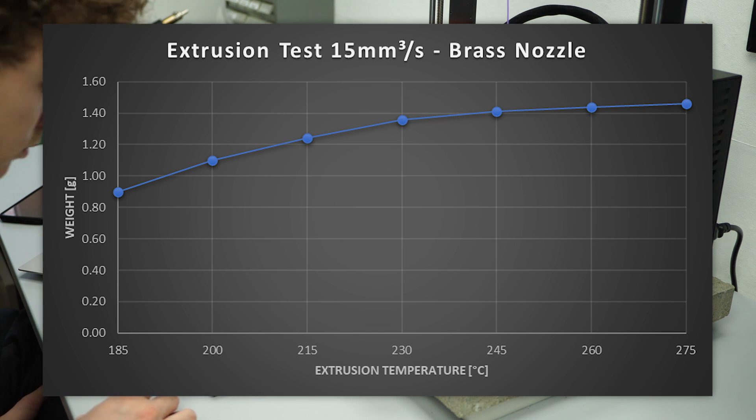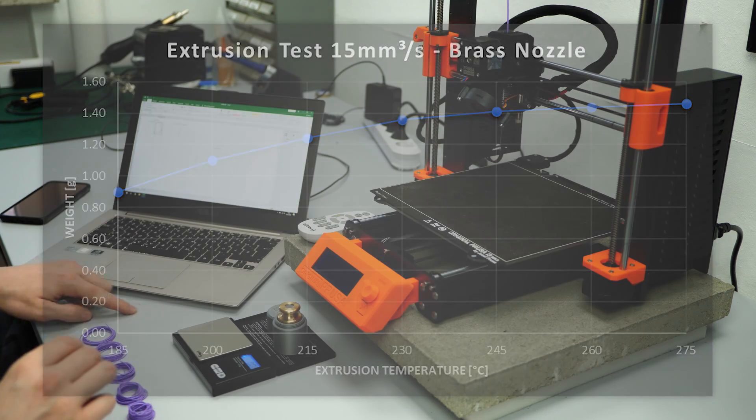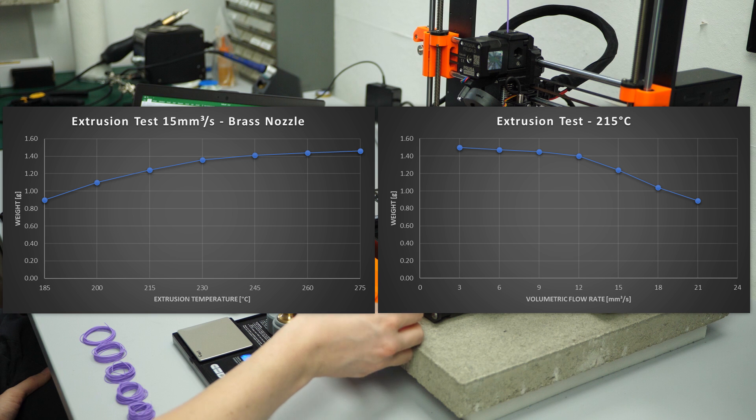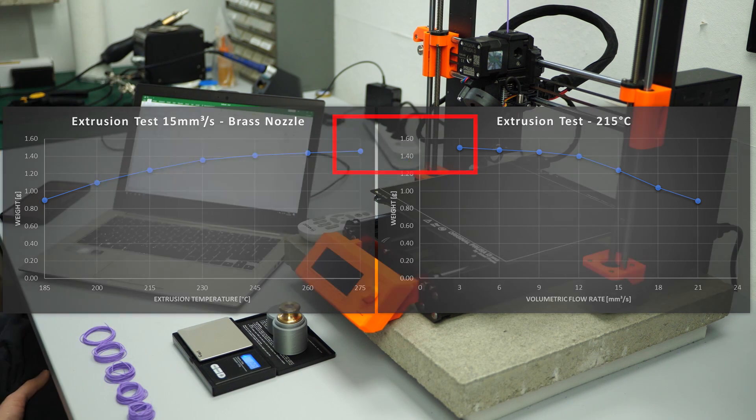At 275 degrees Celsius we basically have no slipping even at 15 cubic millimeters per second and works as well as before at 215 degrees Celsius but only 3 cubic millimeters per second.